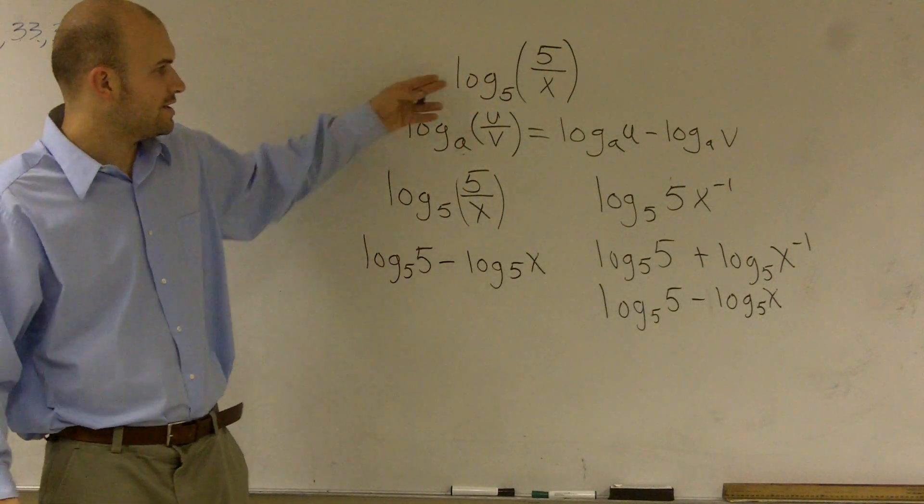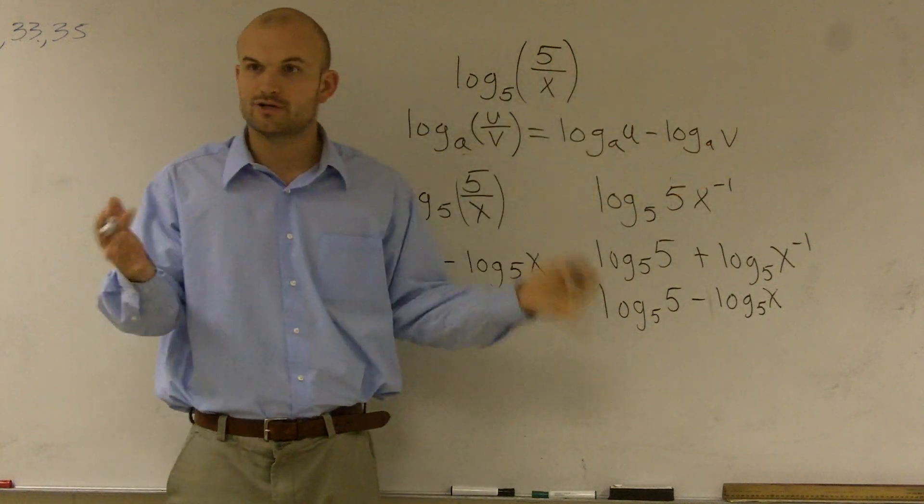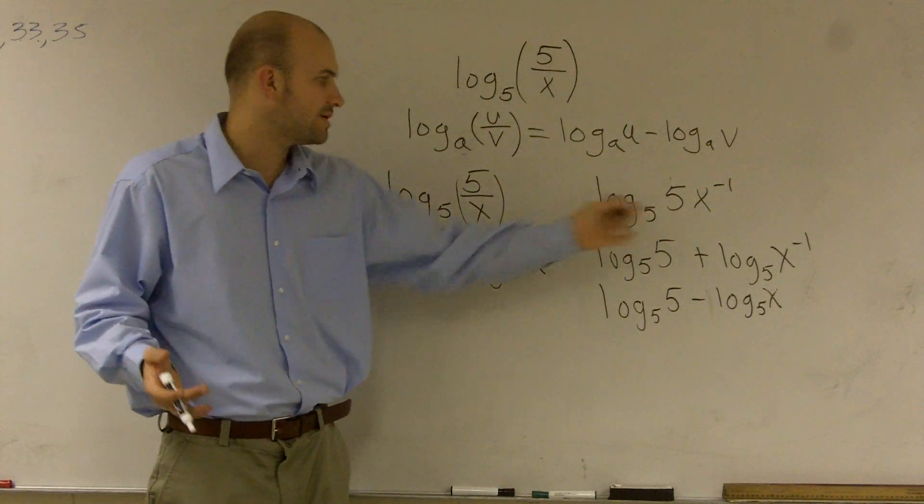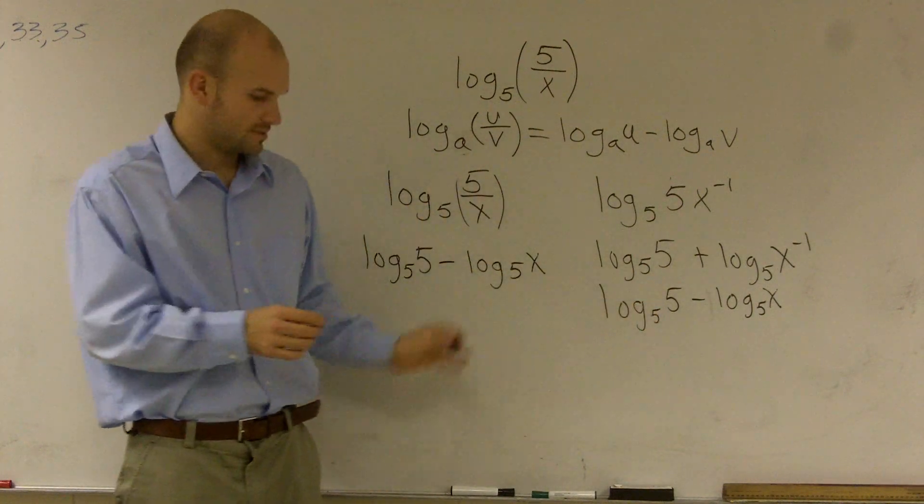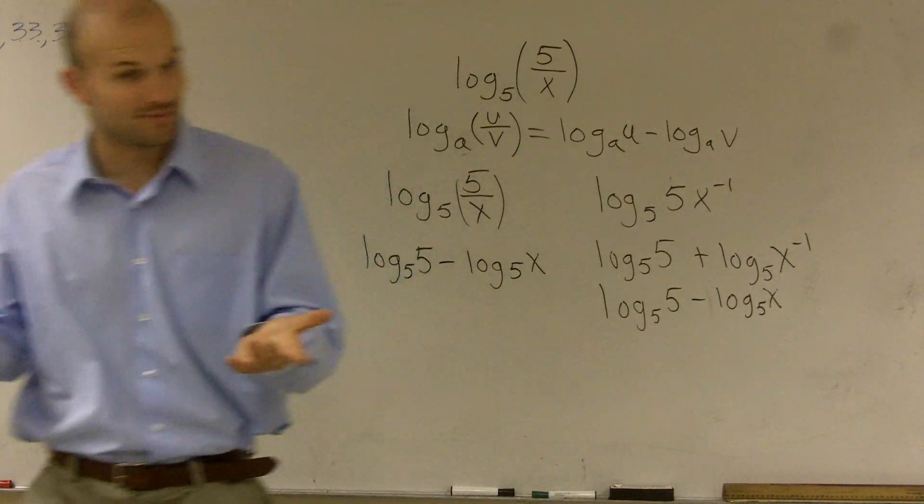Therefore, either way you want to represent the problem, if you have a variable on the bottom and you want to bring it up with a negative exponent, you're not going to be changing the problem. Either way you write it, you're still going to get the exact same answer. That's how we do a log with division when you have a variable on the bottom.